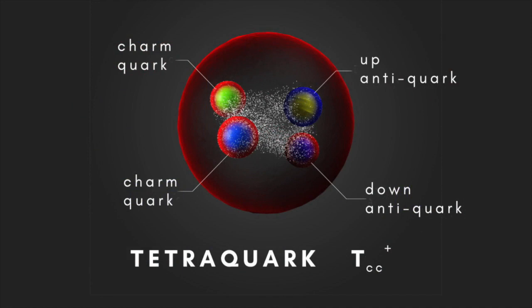Some previously discovered tetraquarks also include charmed quarks. There's one, for instance, that's made up of two charm quarks and two charm antiquarks. The TCC+, however, is the first to contain two charm quarks without any charm antiquarks to balance them.